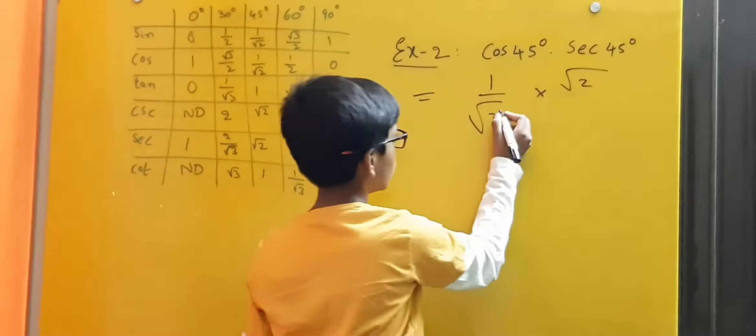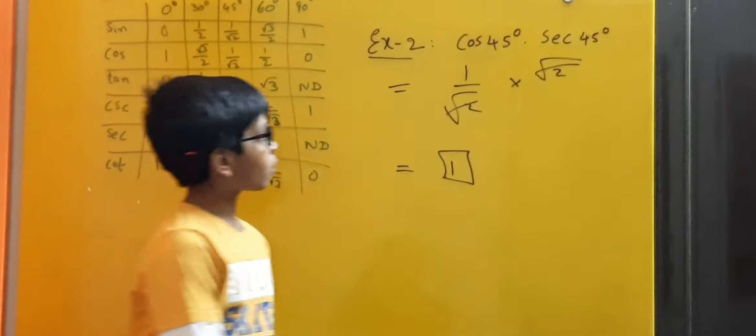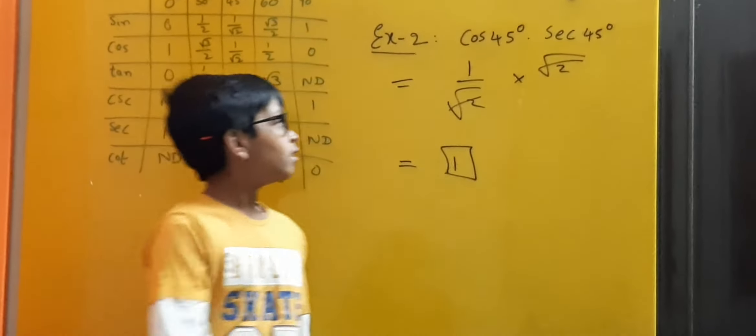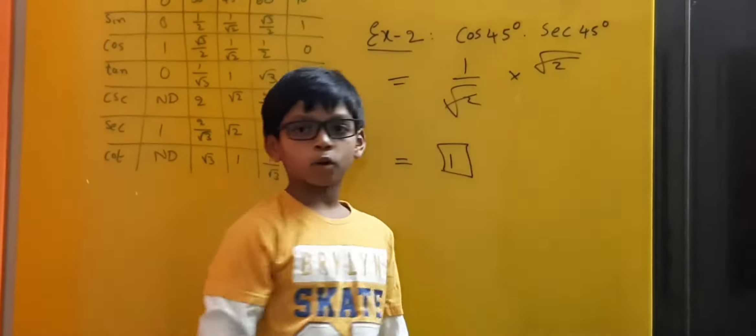Even without calculating in this method, we can directly tell that cos 45 into secant 45 is 1 as these both are reciprocals to each other.